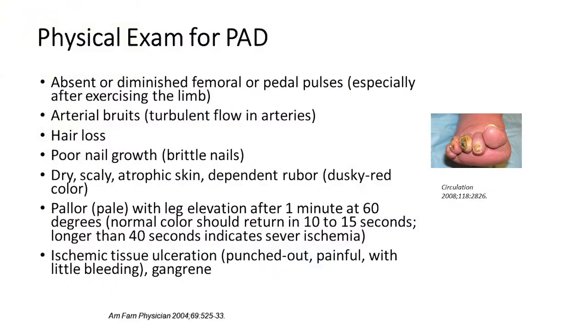On physical examination, patients with peripheral artery disease may have absent or diminished femoral or pedal pulses in the legs, which can occur at rest or after exercise. You may also hear an arterial bruit — turbulent flow in the arteries detectable with a stethoscope — which is the sound of a blockage. Other findings include hair loss, poor nail growth, dry, scaly, atrophic skin, and dependent rubor — a dusky red coloration with leg elevation that indicates poor circulation.